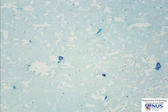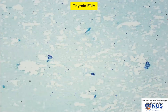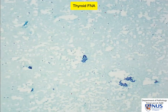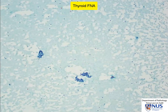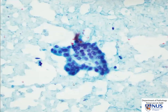Hello. We're looking at an alcohol-fixed smear taken from a thyroid nodule, and at low power magnification, we can see that there are some relatively tight clusters of cells with a hint of micro follicular formations.